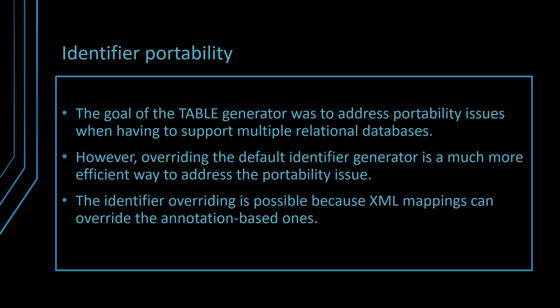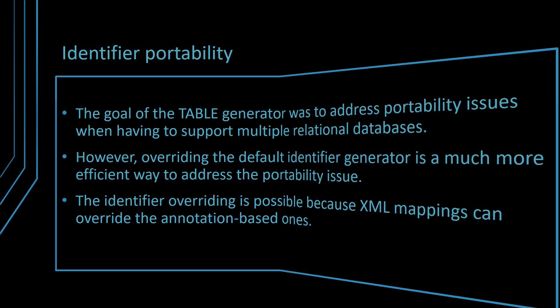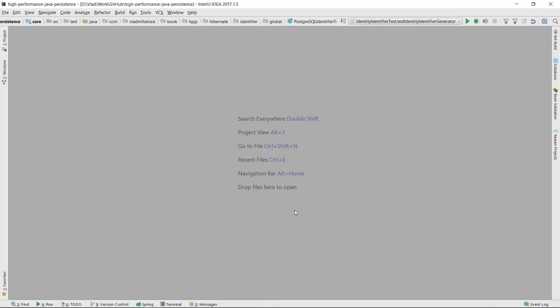The goal of the table generator was to address portability issues when having to support multiple relational databases. However, overriding the default identifier generator is a much more efficient way to address this portability issue. The identifier overriding is possible because XML mappings can override the annotation-based ones.